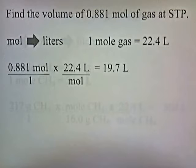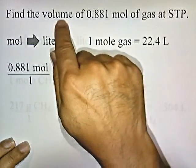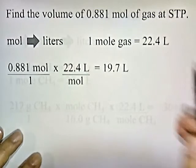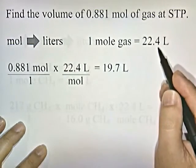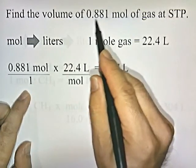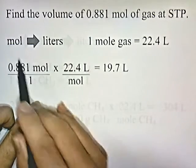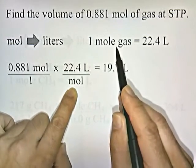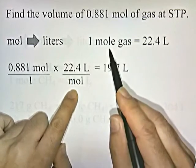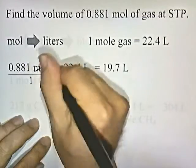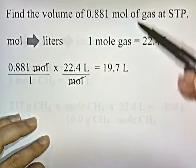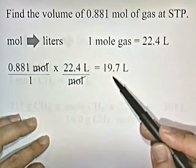Problem 1: Find the volume of 0.881 moles of gas at standard temperature and pressure. We're given moles and want to convert to volume, so we go from moles to liters. Using the fact that one mole of any gas at STP equals 22.4 liters, we take 0.881 moles over 1, put one mole on the bottom and 22.4 liters on top. Moles cancel, and 0.881 times 22.4 gives us 19.7 liters. The amount of space that 0.881 moles of gas takes up is 19.7 liters.